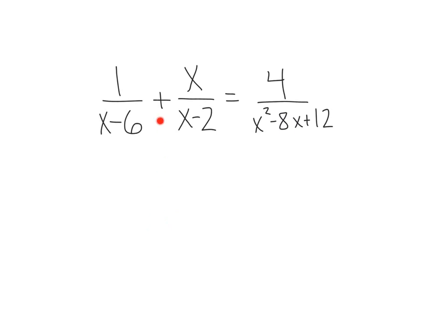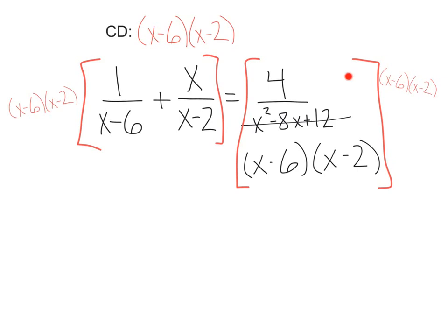Let's go for one more and we'll call it a day. 1 over x minus 6 plus x over x minus 2 equals 4 over x squared minus 8x plus 12. Looks like we should factor this before we see what our common denominator is. Doing that we get x minus 6 and x minus 2. Perfect. It looks like those are going to match up with what we've got here. And that just so happens to be the common denominator. Let's go ahead and multiply that to each side.